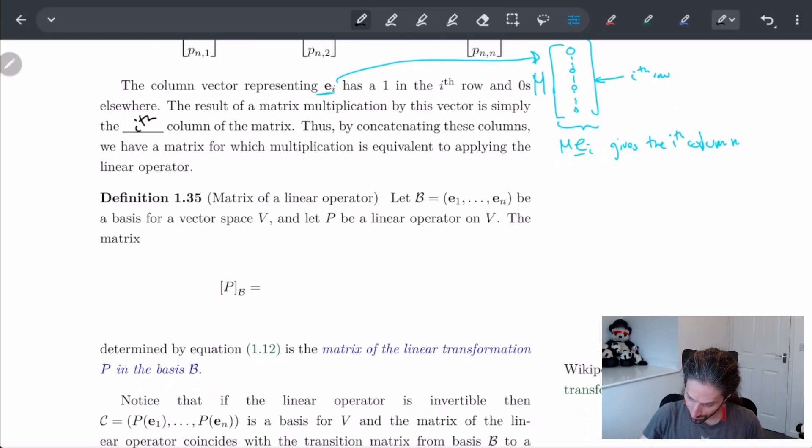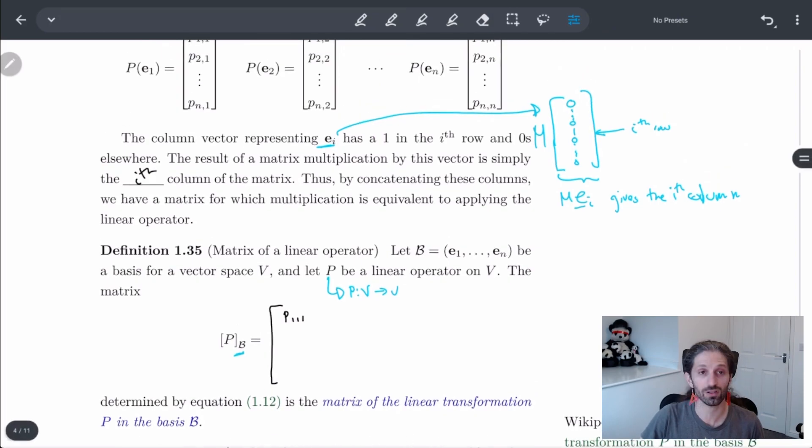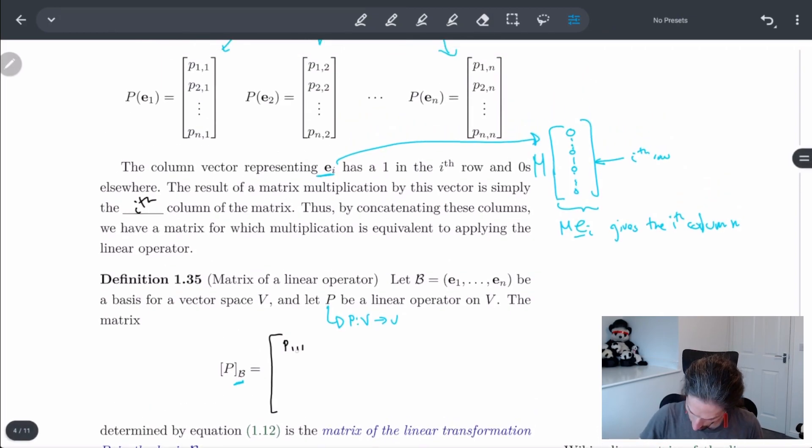So if I start off with some basis and we have some linear operator P, remember P is going from V to V, then the matrix, which we denote P_B—so here, this B is important because depending on the basis we start off with, this is going to be different—will have elements P_11, P_21, all the way to P_N1, then P_12, P_22, and so on.